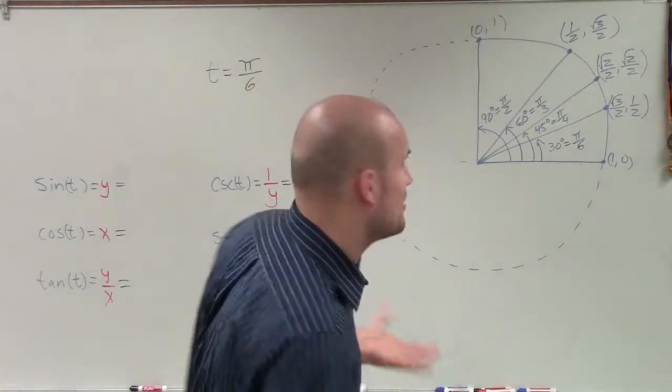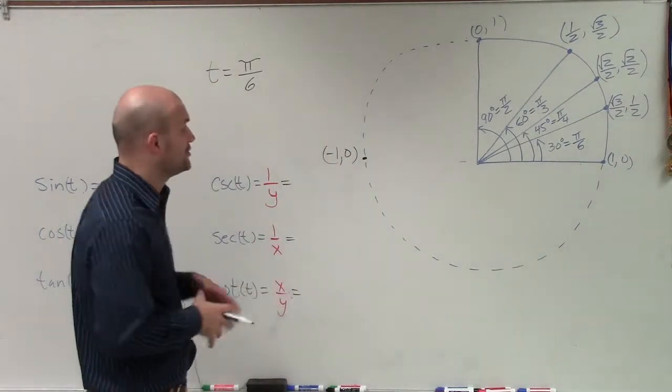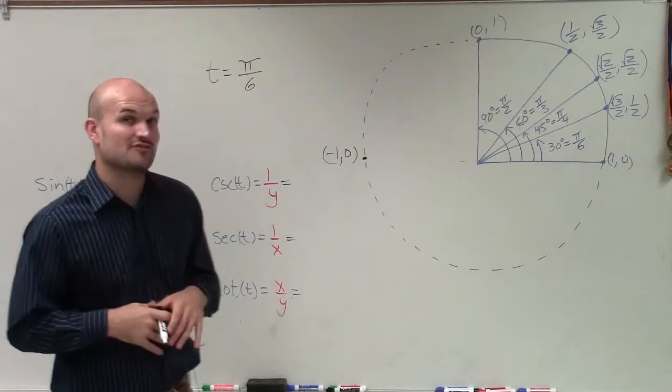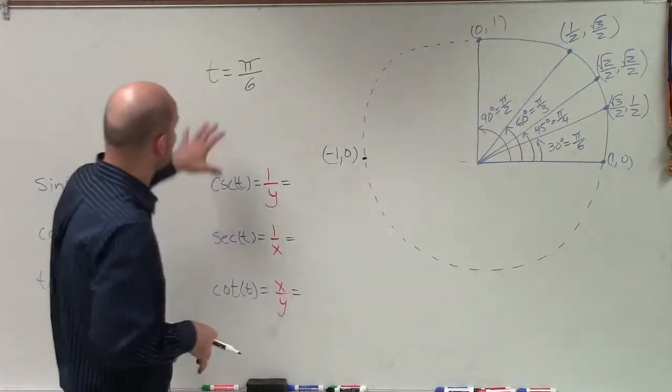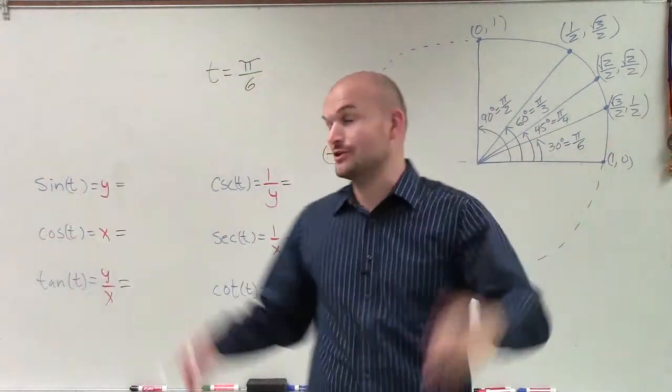Welcome. All right. So ladies and gentlemen, what we're doing in this example is I'm going to show you how to evaluate your six trigonometric functions when we're given an angle that is going to intersect our point that will be on the unit circle.